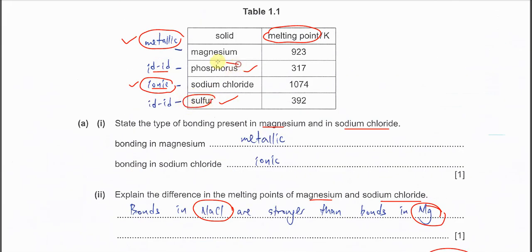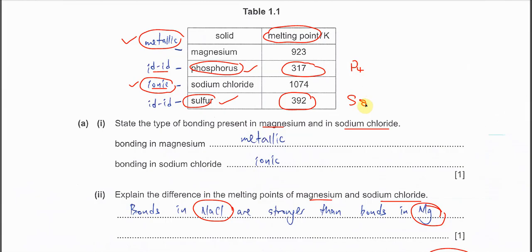Comparing sulfur and phosphorus, both have simple molecular structure, but sulfur has a higher melting point than phosphorus. The size is the main factor. Sulfur is S8 — eight sulfur atoms in one molecule — while phosphorus is P4 — four phosphorus atoms in one molecule. That is why sulfur is larger than phosphorus and has stronger id-id forces.